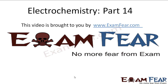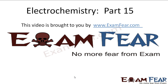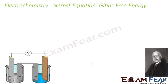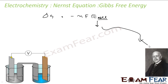Hello friends, this video on electrochemistry part 14 is brought to you by examfear.com. Now let's see the Gibbs free energy for the Nernst equation. We have seen that delta G is nothing but minus NfE, and E is the cell potential at a given concentration, which can be found by the Nernst equation.